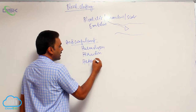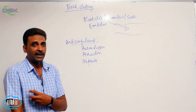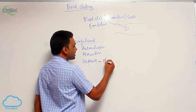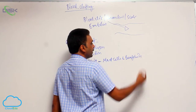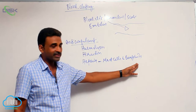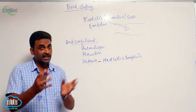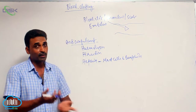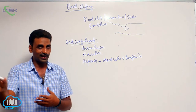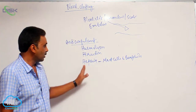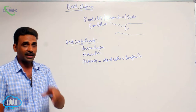In human beings, there is heparin — an anticoagulant present inside the blood, released by mast cells and basophils. In blood, it is basophils; in connective tissue, it is mast cells, mostly inside the liver. We call it heparin because of hepatic origin. As long as heparin is produced, there is no blood clotting inside the blood vessels.